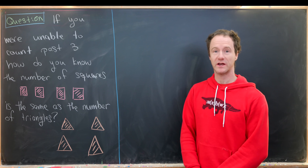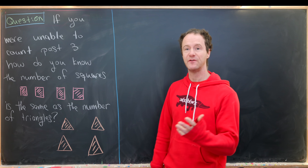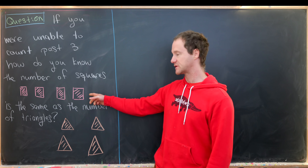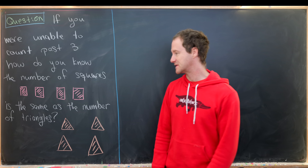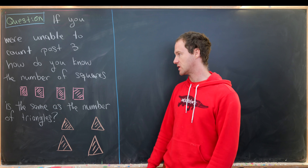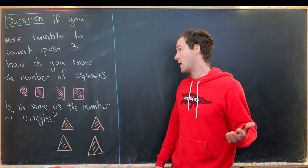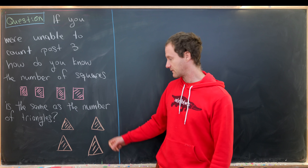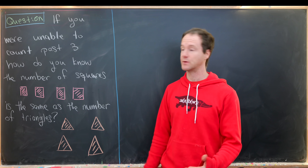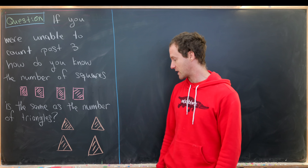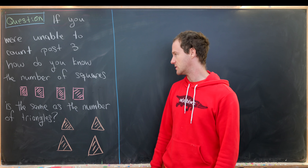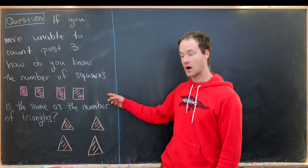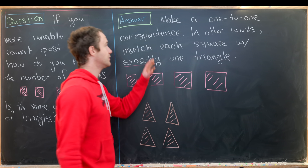We're going to start with a really basic question: if you were unable to count past three, how do you know that the number of squares drawn is the same as the number of triangles? Obviously we can all count past three, so we can see that there are four squares and four triangles — four equals four. But suppose you couldn't count past three. How would you determine that this is the same number of objects as this?